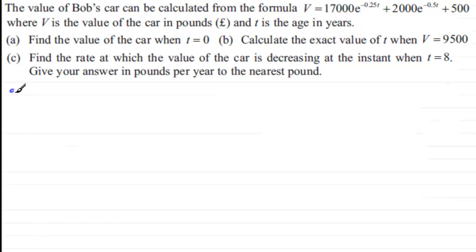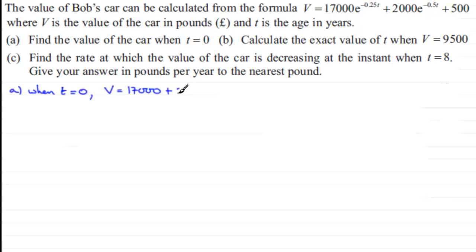In part A, all it is is substituting t equals zero into our equation. When t equals zero, anything to the power zero is going to be one, so it's just going to be 17,000 plus 2,000 plus 500. Totalling this up, the value of the car turns out to be 19,500 pounds.